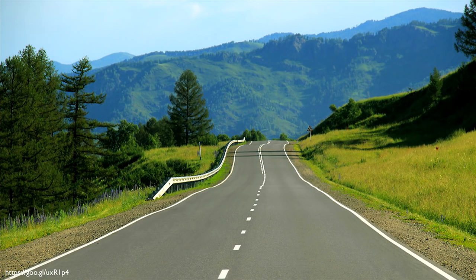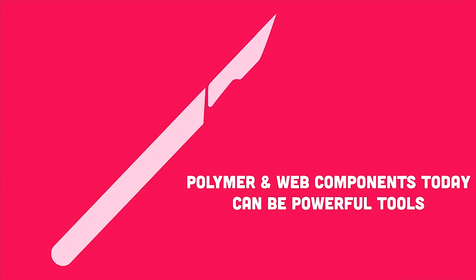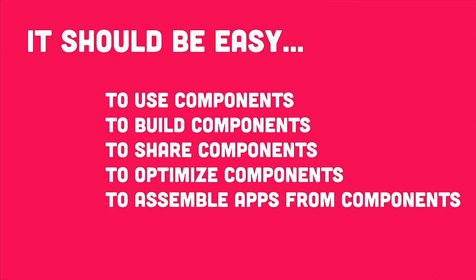So what's next? Polymer has come a really long way but is constantly growing — over 20 people are working directly on the Polymer project. Right now the Polymer library is very much a scalpel: a powerful tool in the right hands, but still easy to make mistakes. We want it to be easy to build applications generally — easy to use, build, share, and optimize components, and easy to assemble entire applications out of these components.